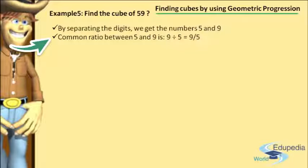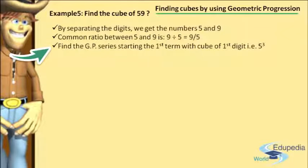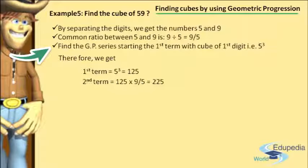Moving to step number 3, we have to find the geometric progression series starting with the first term as the cube of the first digit, that is 5 cubed. So the first term is 5 cubed, which equals 125. To find the second term, we multiply the first term by the common ratio 9/5. So 125 × 9/5 equals 225.